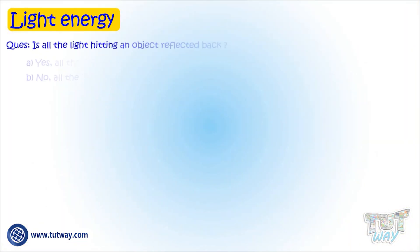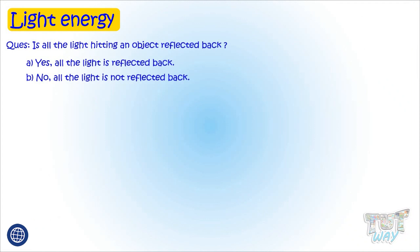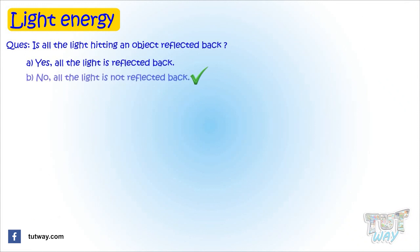Kids, we learned that we see any object because of the light that hits on it reflects back, and that reflected light makes us see that object. Does all the light hitting an object reflect back or some of it? Actually, not all light is reflected back — some of it is absorbed by the object.